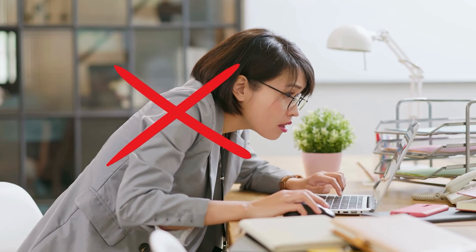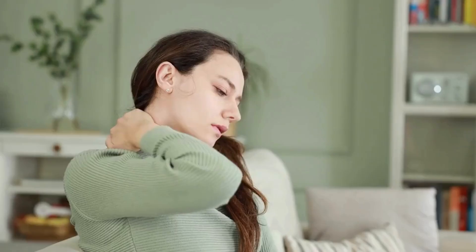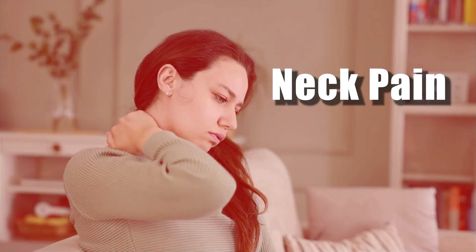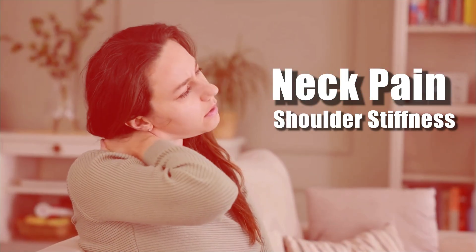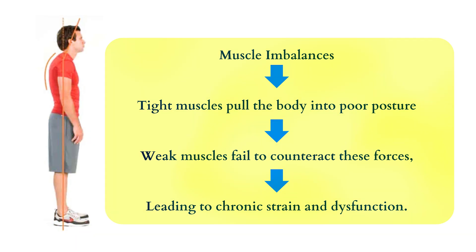Upper crossed syndrome is one of the most common postural dysfunctions, leading to neck pain, shoulder tightness, and reduced mobility. It occurs due to muscle imbalances in the upper body. Tight muscles pull the body into poor posture while weak muscles fail to counteract these forces, leading to chronic strain and dysfunction.